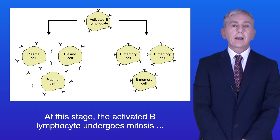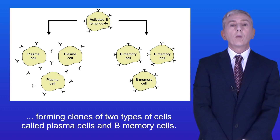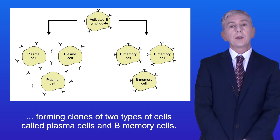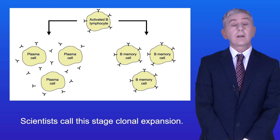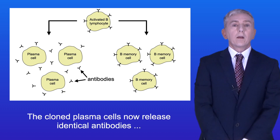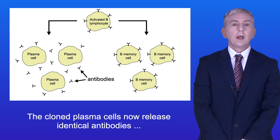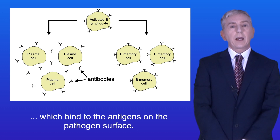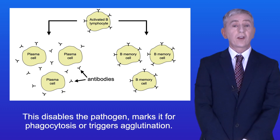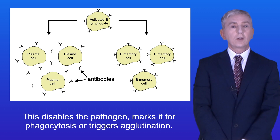At this stage, the activated B lymphocyte undergoes mitosis, forming clones of two types of cells, called plasma cells and B memory cells, and scientists call this stage clonal expansion. The cloned plasma cells now release identical antibodies, which bind to the antigens on the pathogen surface. This disables the pathogen, marks it for phagocytosis, or triggers agglutination.